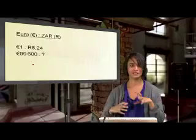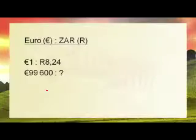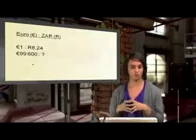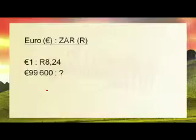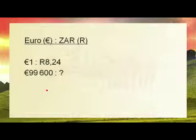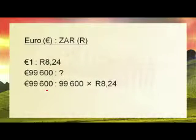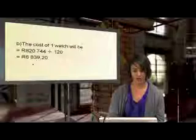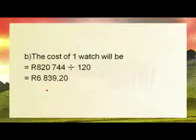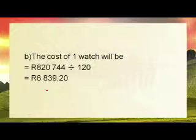Now we want to work out what this would cost in rands. One euro is equal to 8 Rand and 24 cents, and 120 watches cost 99,600 euros. So we multiply 99,600 by 8.24, and that gives us 820,704 rands for 120 watches. To find the cost of one watch, we divide by 120, which gives us 6,839 Rand and 20 cents.